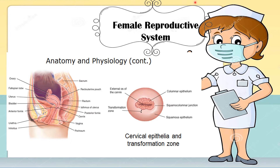The vaginal surface of the cervix — the ectocervix — is seen easily with the help of a speculum. At its center is a round, oval, or slit-like depression — the external os of the cervix — which marks the opening into the endocervical canal. The ectocervix is covered by fleshy red columnar epithelium that surrounds the os and lines the endocervical canal, and by a shiny pink squamous epithelium that continues with the vaginal lining.